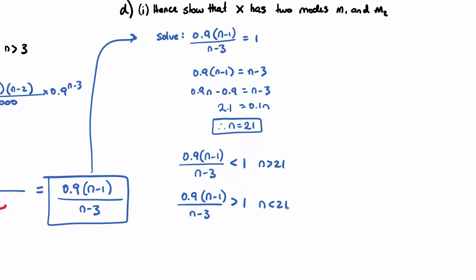So what we can see here is that X has two modes. The modes will occur when N equals 21. So we're going to have two modes. This occurs when N is 21.